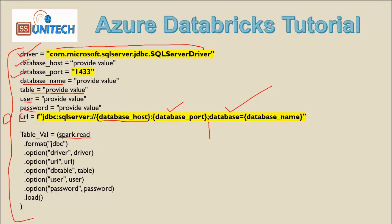Then we use spark.read. Inside the options we will be providing the option for the URL, and under that URL we are going to use this variable. It will make the connection, and we will be reading the data from the table supplied inside the option of dbtable.